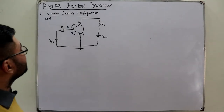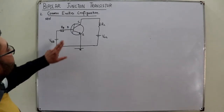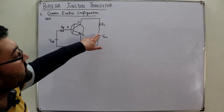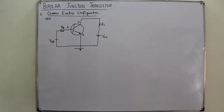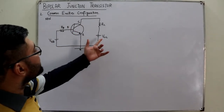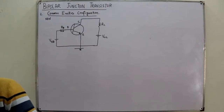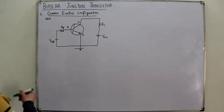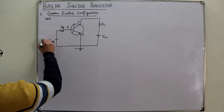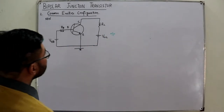The collector is N-type, so it connects to the positive side — this junction is reverse biased. Without resistances you can directly name the voltages as VBC and VCE. We want to operate in active mode. The input is on the base side, the output is on the collector side, and the emitter is common.